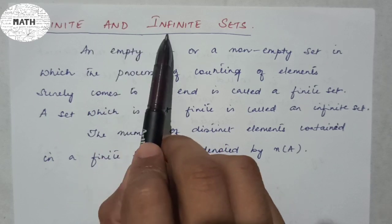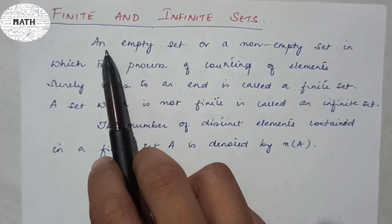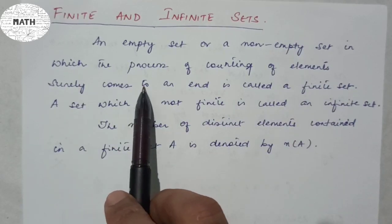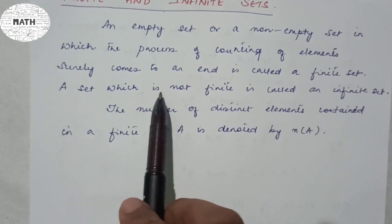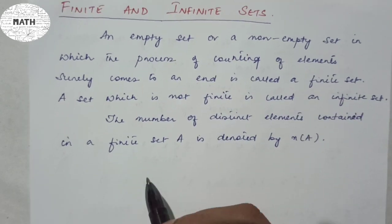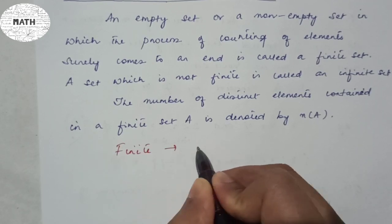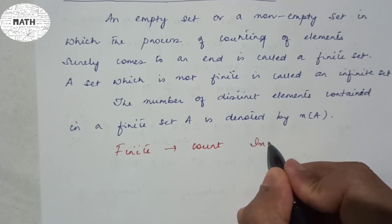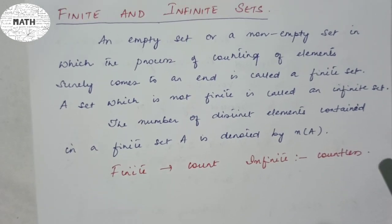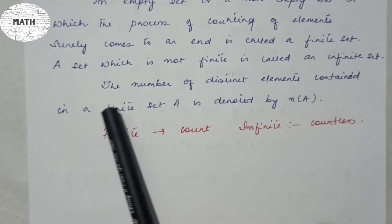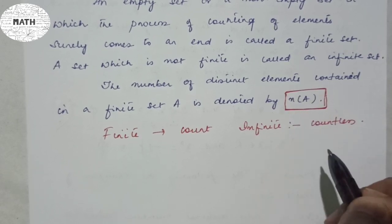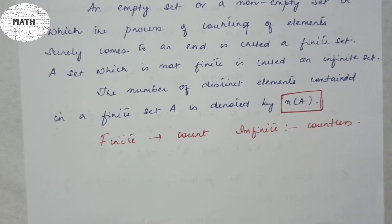The next topic is finite and infinite sets. An empty set or a non-empty set in which the process of counting elements surely comes to an end is called a finite set. A set which is not finite is called an infinite set. In simple terms: a finite set is one you can count, while an infinite set is countless. The number of distinct elements in a finite set A is denoted by n(A).